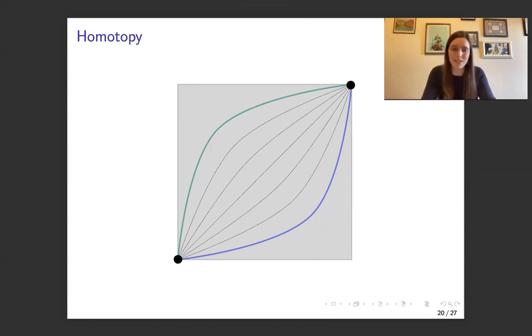Homotopy, so this is a big term in topology, where you want to continuously deform one path to the other through a bunch of intermediate paths. And in this example, the blue path is homotopic to the green path.